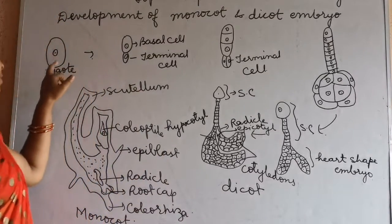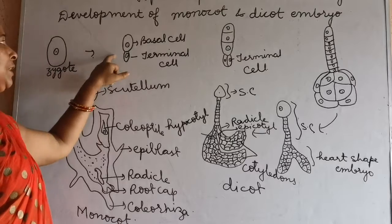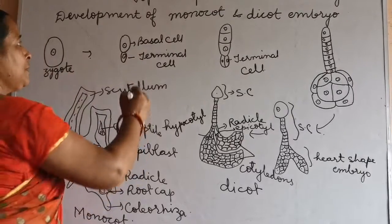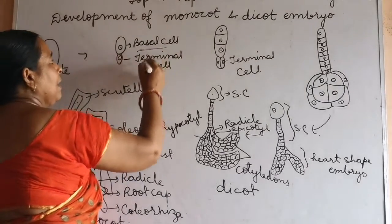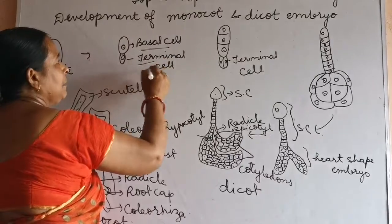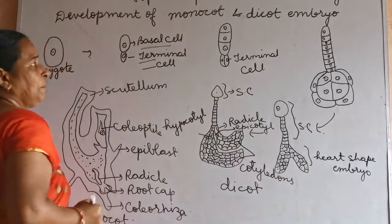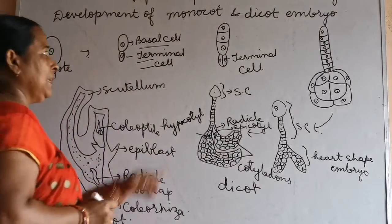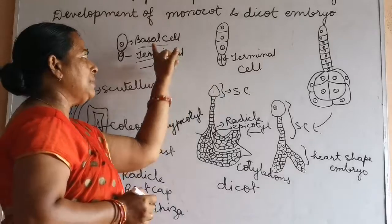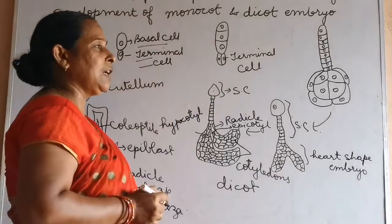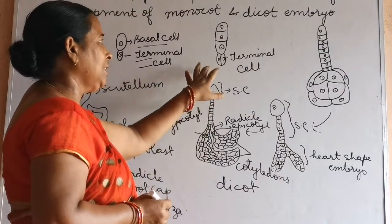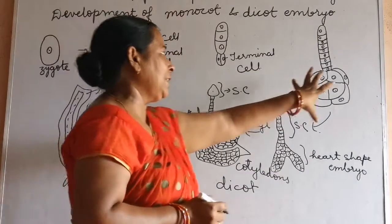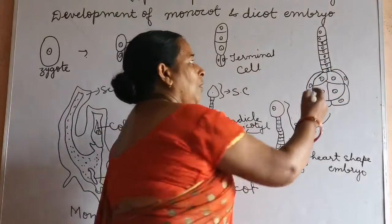This zygote will undergo formative division and form two types of cells, named as basal cell and terminal cell. There will be division in the terminal cell, whereas the basal cells start providing nutrition. In that condition, the terminal cell may divide into an octate.